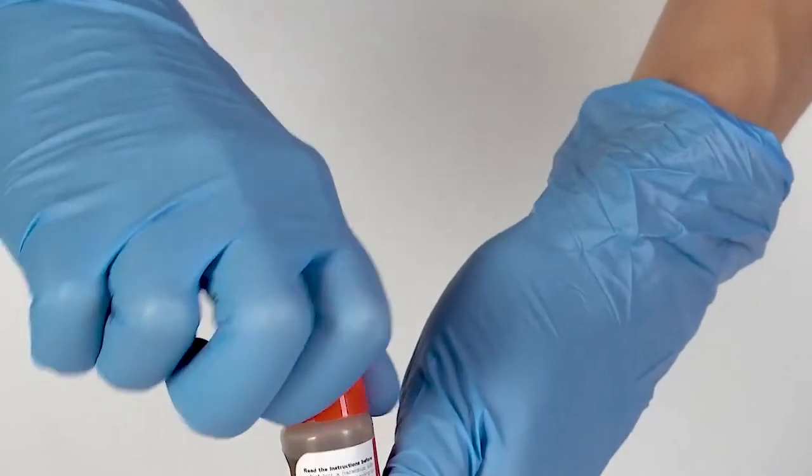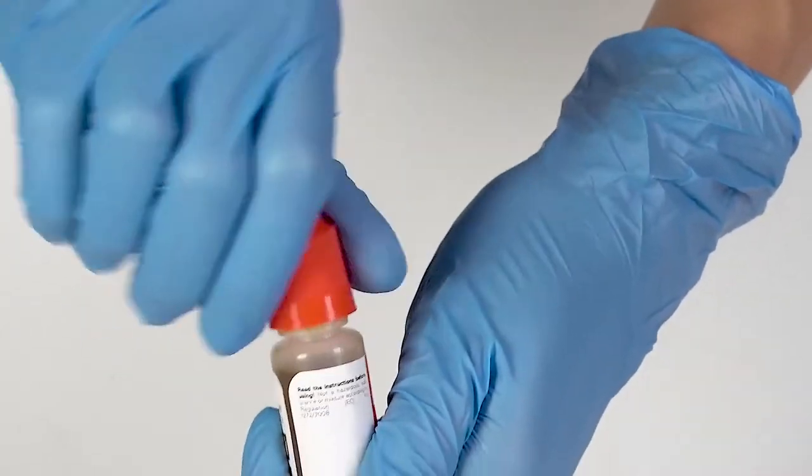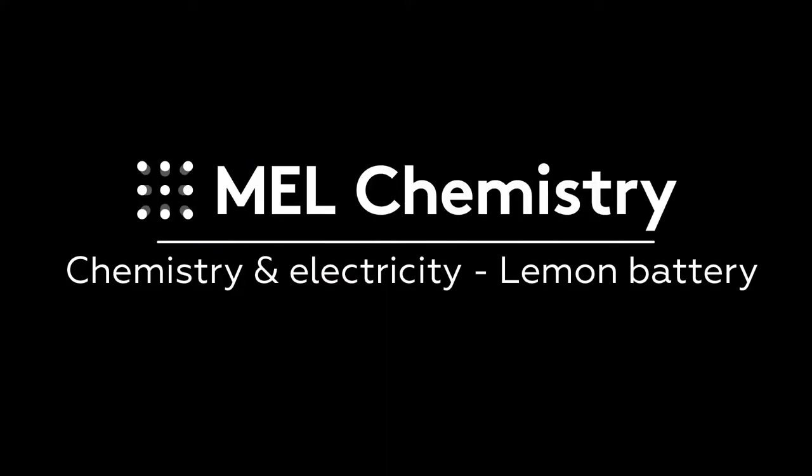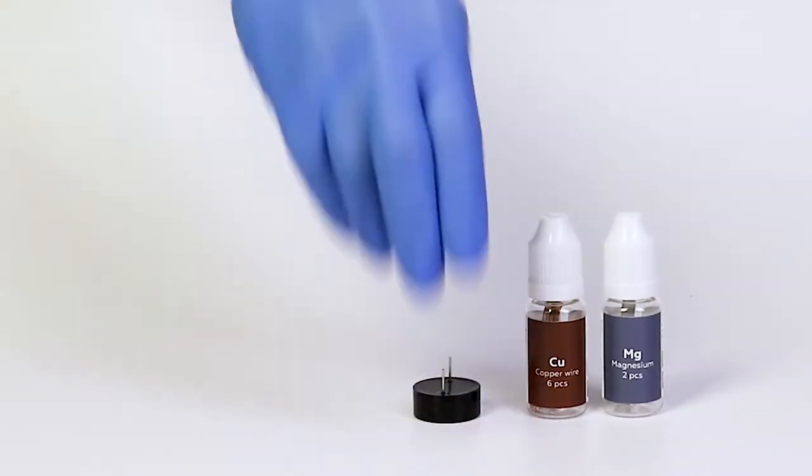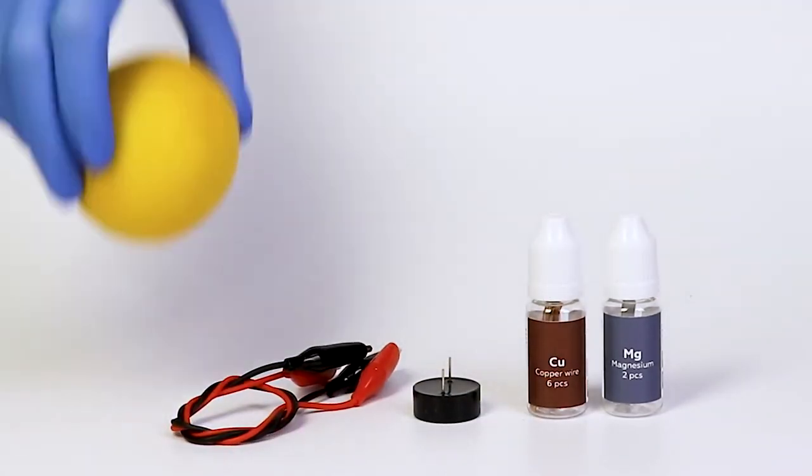To open a bottle containing a reagent, push the cap down and turn it. For the lemon battery experiment, you'll need magnesium plates, a copper rod, a buzzer, crocodile clip wires, and a lemon.